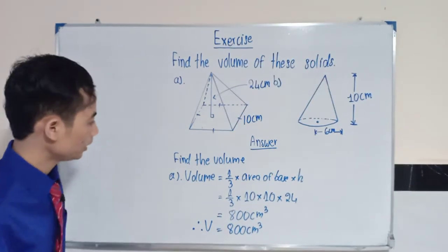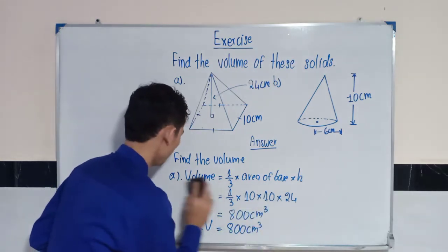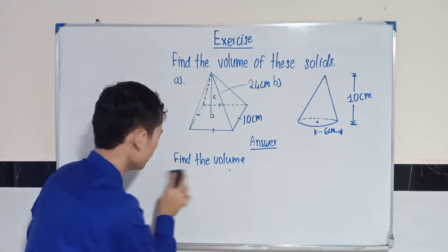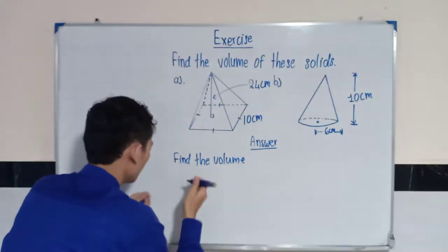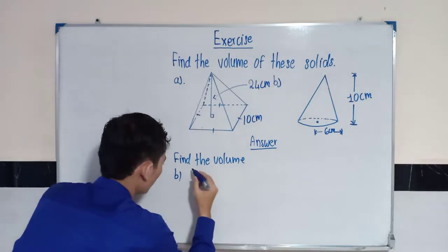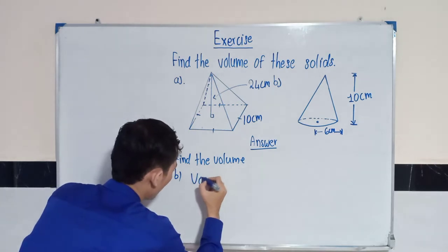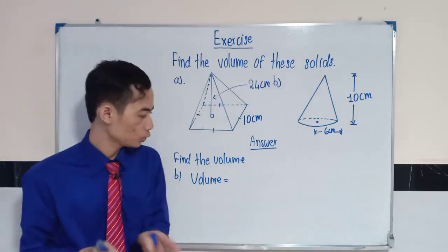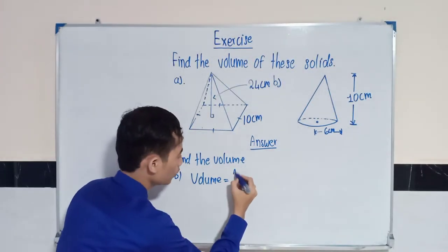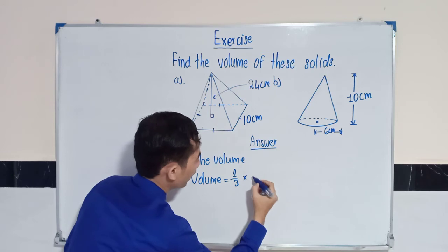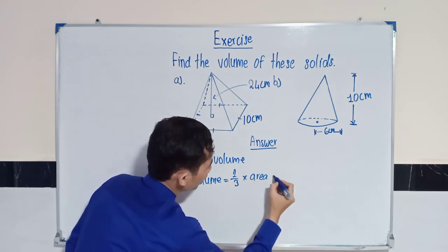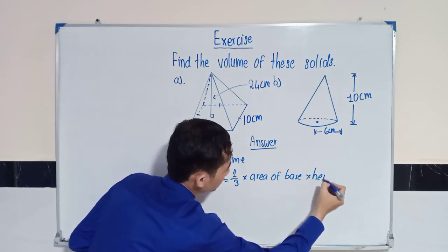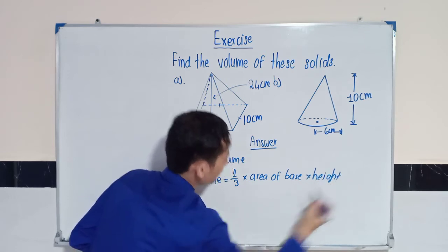Then B. I can erase this one. Find the volume. We can use the same formula. Volume is equal to 1 over 3 multiplied by area of base multiplied by height.